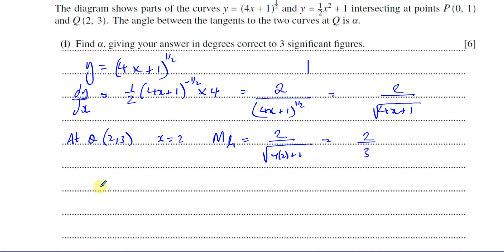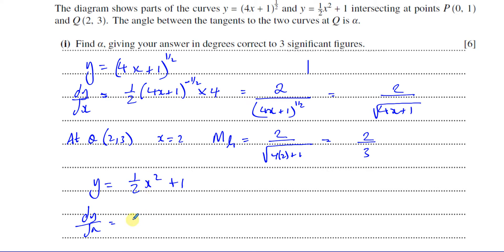For the second curve, y = (1/2)x² + 1, dy/dx is simply x. So the gradient of tangent 2 at x = 2 is just 2.